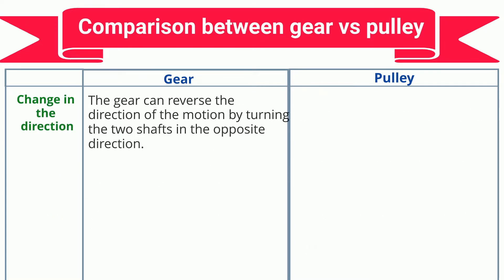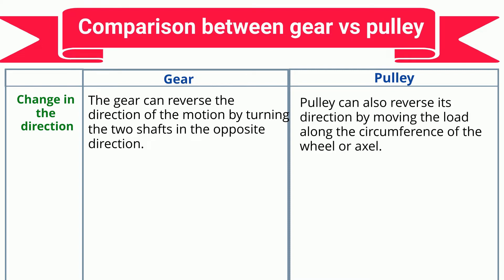Change in direction: The gear can reverse the direction of motion by turning the two shafts in the opposite direction. The pulley can also reverse its direction by moving the load along the circumference of the wheel or axle.